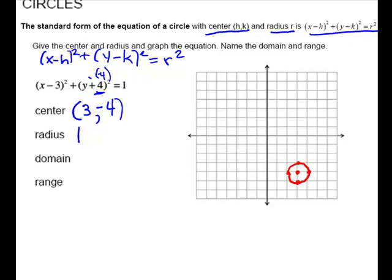And for our domain, it is going to be 2 is the leftmost point, and we're touching it. And then the rightmost point will be 4. Range, the lowest point is negative 5, and the highest point is negative 3.